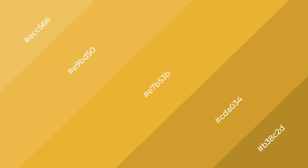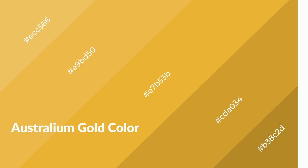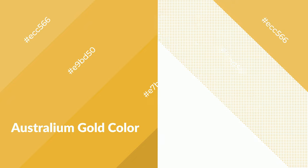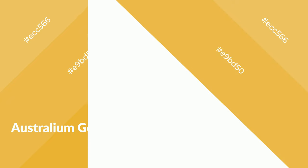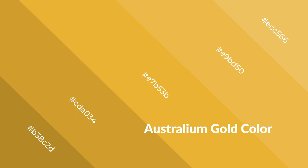Australium gold is a warm color and it emits cozier and active emotions. Warm colors are symbols of warmth, fire, heat, and sunshine. It also evokes joy, passion, love, and even anger. You can see them used in restaurants and gyms.